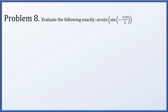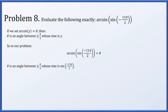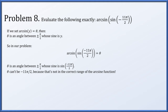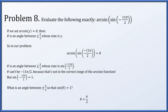Problem 8: evaluate exactly the arcsine of the sine of negative 11 pi over two. We're looking for an angle between plus or minus pi over two whose sine equals the sine of negative 11 pi over two. We cannot just use negative 11 pi over two because it is not between plus or minus pi over two. However, the sine of negative 11 pi over two is exactly one, so we need an angle between plus or minus pi over two whose sine is one — that is pi over two.